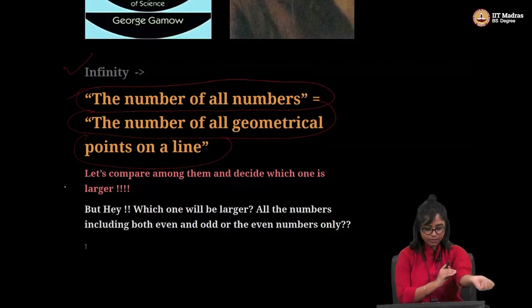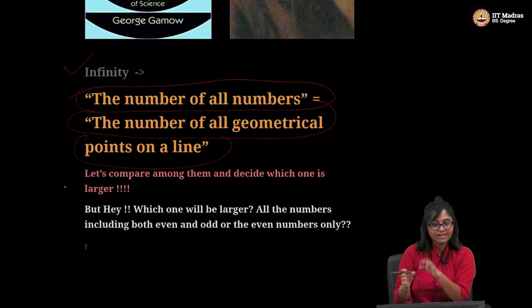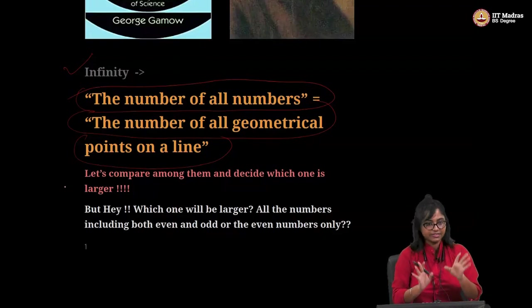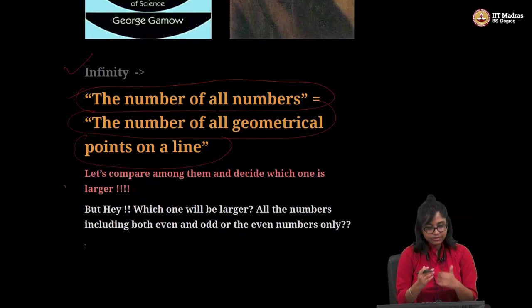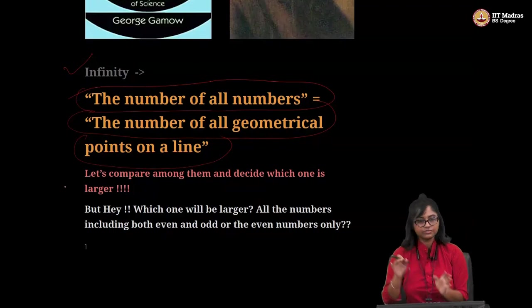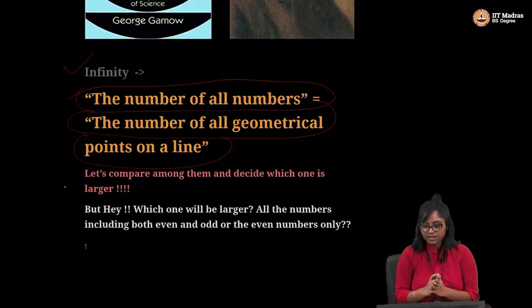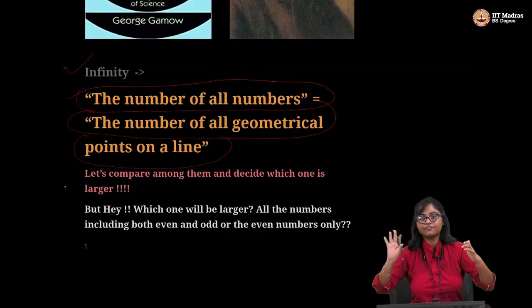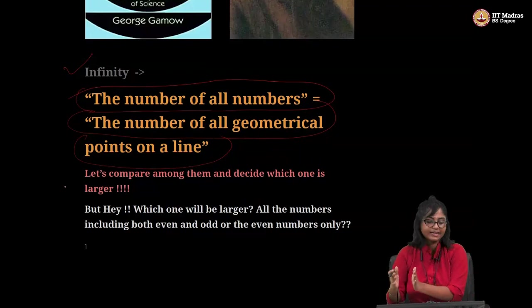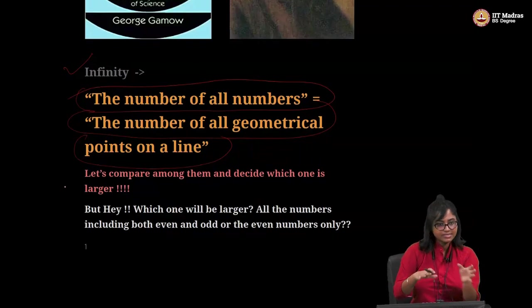So the argument goes like this. He says, suppose the tribe, which can count only up to three, they have two boxes. In one box they have balls and in one box they have coins. Now they can see if there is more coins left or there is more balls left in the bucket. Like their usual notion. And then they can, now anything apart from three is infinity to them.